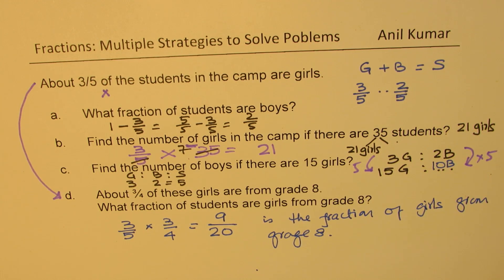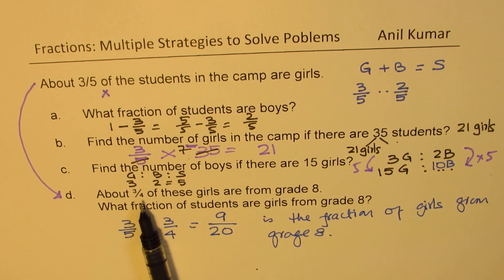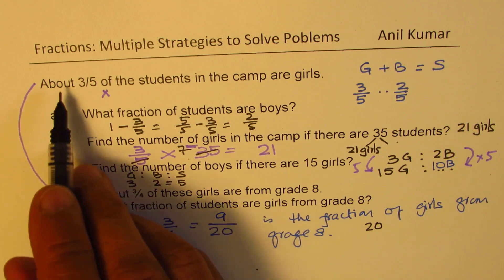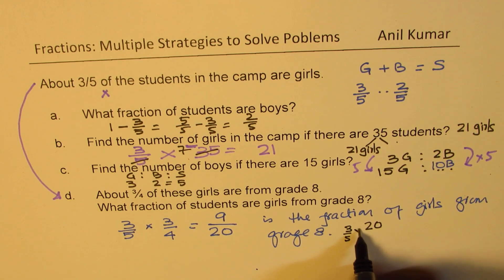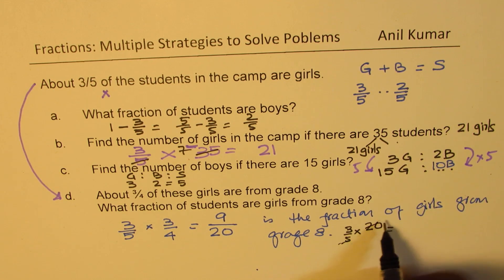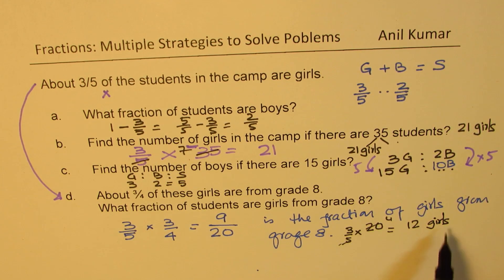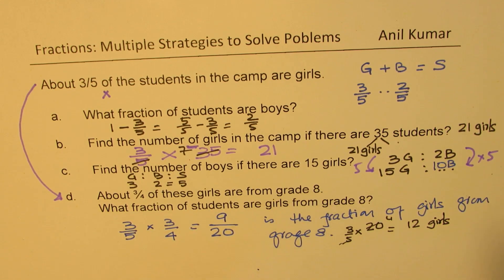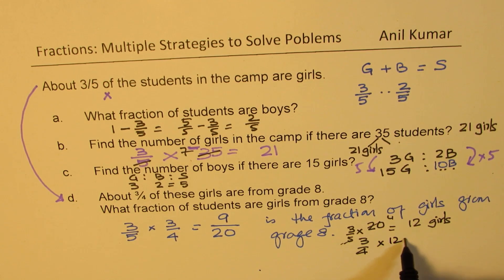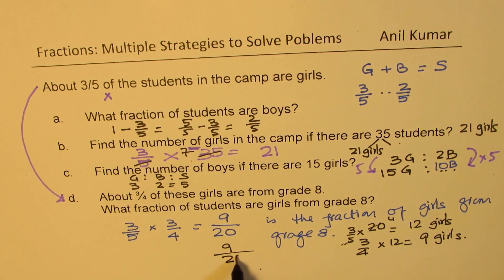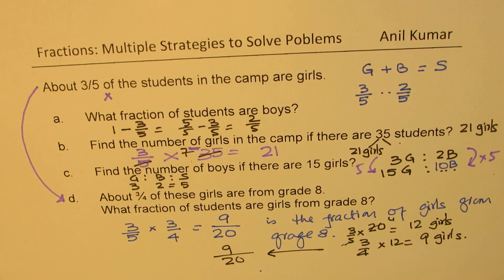An alternate method: since we're dealing with fifths and fourths, we can pick the number twenty as our base. Three-fifths of twenty — five goes four times, so there are twelve girls. Then three-fourths of twelve girls are from grade 8: three divided by four of twelve gives nine girls. We started with twenty, and nine out of twenty are girls from grade 8. That is the second way to solve this question.